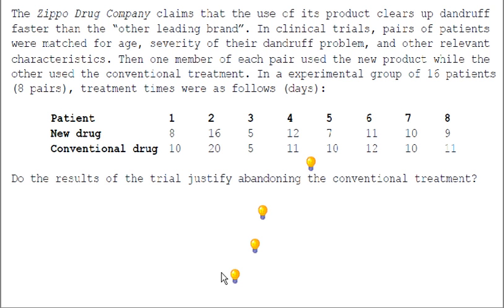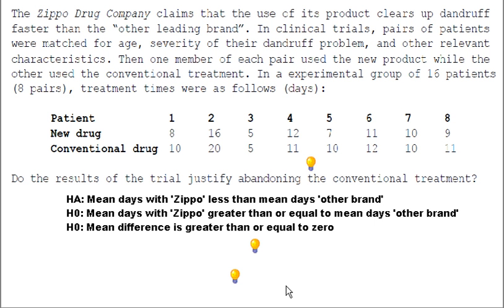Here's exercise 3: the Zippo drug company claims that its product clears up dandruff faster than the other leading brand. The question is, do the results of the trial justify abandoning the conventional treatment? First thing to do is state some hypotheses. The prediction by the company is that the number of days treated with Zippo should be less than the number of days with the other brand.